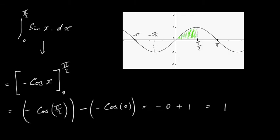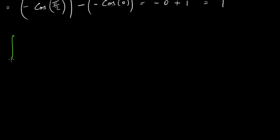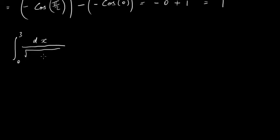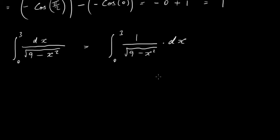So that's the second one done. Let's have a look at another one. In this case, we're going to look at the integral between 0 and 3 of 1 over the square root of 9 minus x squared. The dx is in the numerator, so we can write this as the integral from 0 to 3 of 1 over the square root of 9 minus x squared dx. It's the same thing — here we just have dx as our numerator.